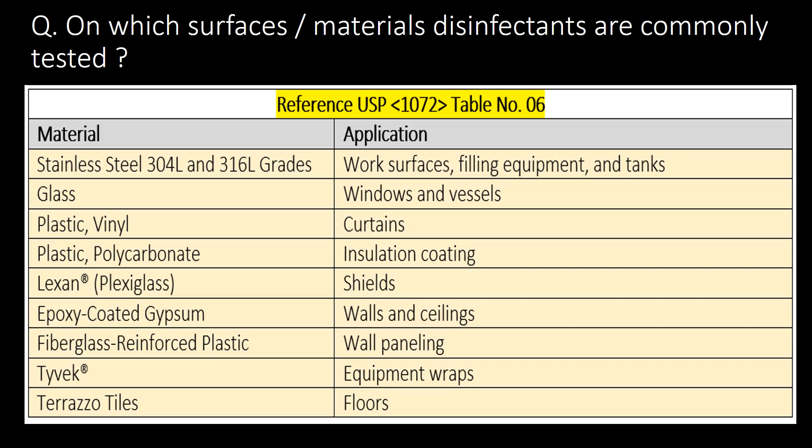On which surfaces or materials are disinfectants commonly tested? You can refer to the table for the different materials on which we test disinfectants. The commonly used materials are stainless steel, glass, plastic, polycarbonate, epoxy, fiberglass, and vinyl.